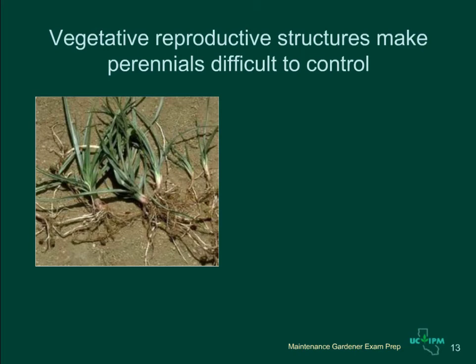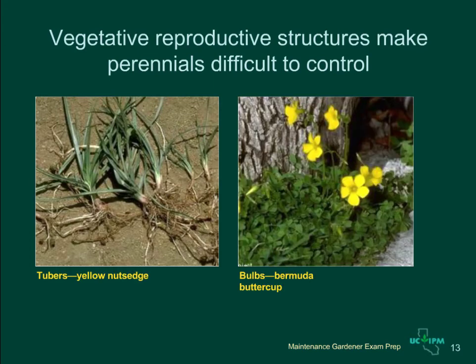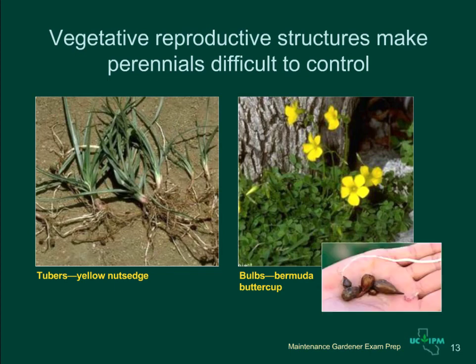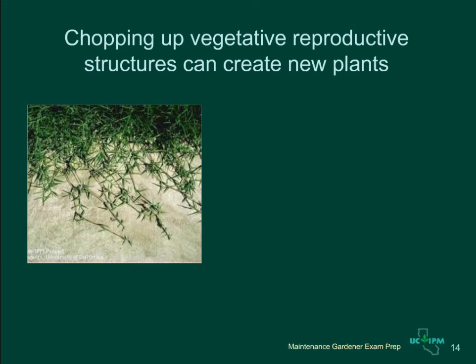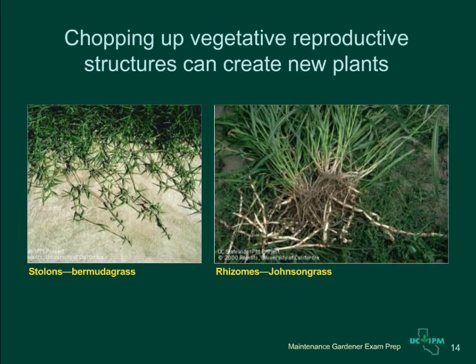There are several types of vegetative structures that allow perennial plants to survive when growing conditions are not good. All of these structures can also sprout new plants and help spread the weeds. Yellow nutsedge has tubers which grow from roots. Bermuda buttercup, or oxalis, has bulbs — new plants emerge from the bulbs each year. Bermuda grass spreads through above-ground stems that grow horizontally, called stolons. Johnson grass has underground stems that function in the same way, called rhizomes. If you chop up these structures with a rototiller or a hoe, you may create even more serious problems because new plants can grow from the vegetative structures, and they can also be moved with soil to infest new locations.